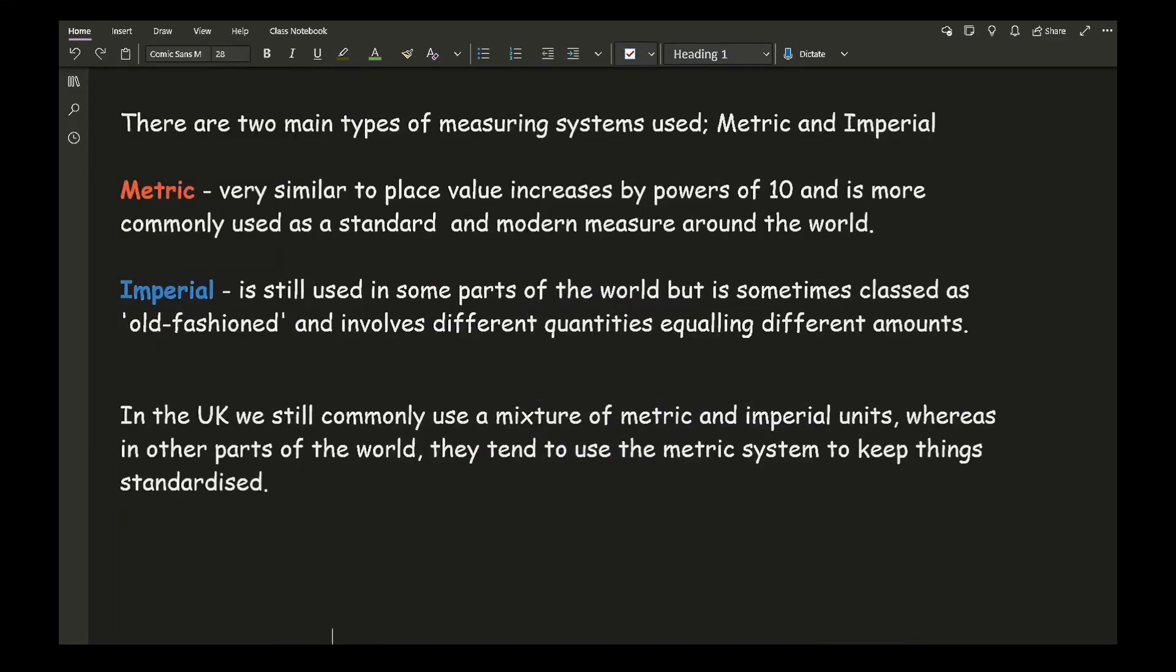There are two main types of measuring systems used around the world: metric and imperial. The metric system is very similar to place value and increases in powers of 10, which makes it easier to understand. It's standardized and is generally used as a modern measure around the world.